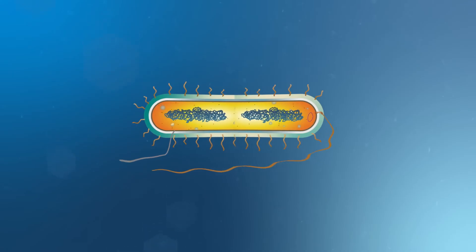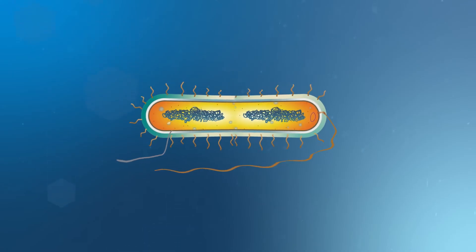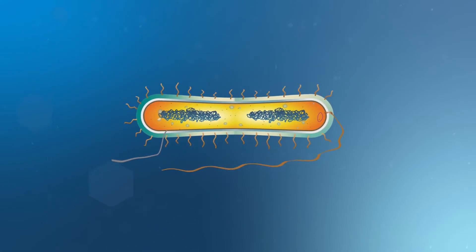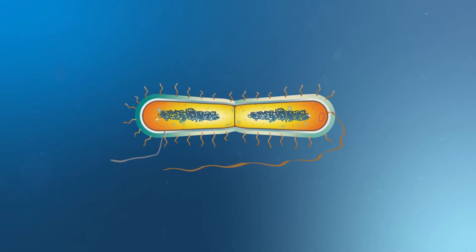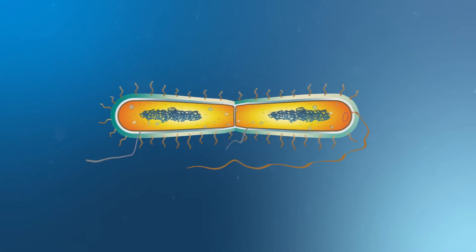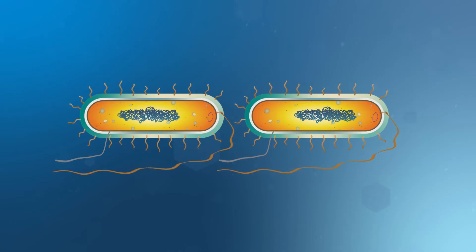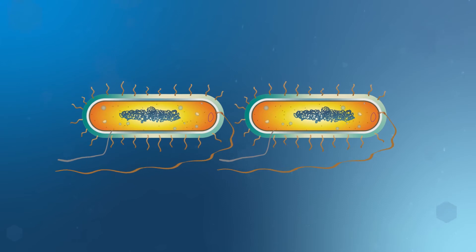As the cell begins to elongate, the cell walls lengthen and the cell walls and membranes start to pinch in. The DNA strands separate, ensuring that each new cell will end up with one copy of the DNA.